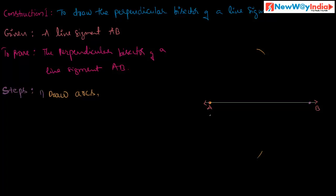These two arcs are drawn from point A. Now draw two more arcs from point B, with B as center. These arcs from A and B meet at points P and Q. Join P and Q — we get a line PQ.